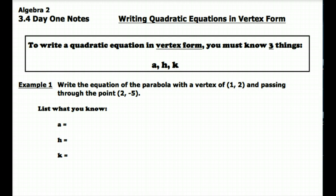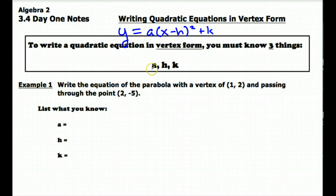In order to write something in vertex form — which is y equals a times the quantity x minus h squared plus k — you need to know three things: you need to know what a is, what h is, and what k is.